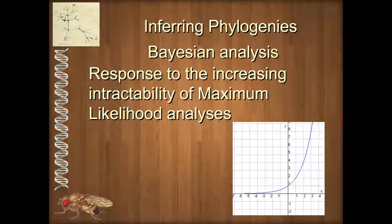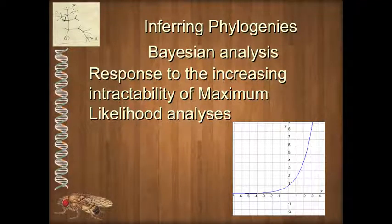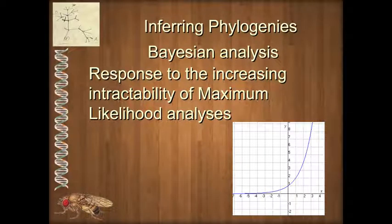This lecture represents our last talk about methods for phylogenetic analysis, and we're going to talk about Bayesian analysis. Bayesian analysis is the most recent method developed to estimate phylogenies and try to find the best sets of relationships among organisms.